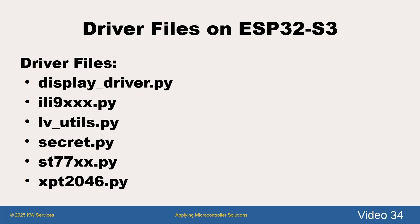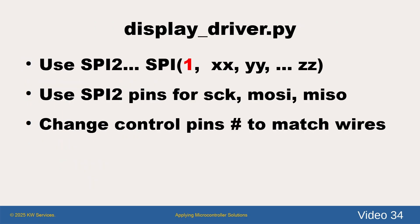If you recall video 33, we have a collection of driver files that reside on the flash drive. Since these are MicroPython files, they are pretty much the same files we used on the Raspberry Pi Pico platform. The files are at the GitHub site. We update the display driver file with the SPI and control pin numbers, and remember, SPI 2 means we enter 1. The driver file at the GitHub site uses the pin numbers mentioned earlier.